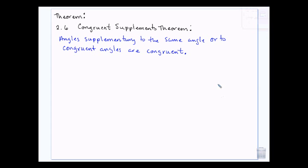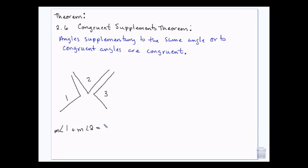The congruent supplements theorem covers two situations. First, if angle 1 and angle 2 equal 180, and angle 2 and angle 3 equal 180, that makes angle 1 congruent to angle 3. Because 1 plus 2 is 180 and 2 plus 3 is 180, angles 1 and 3 must be the same — for example, if angle 2 is 100, then both angle 1 and angle 3 have to be 80.